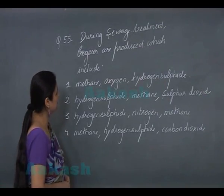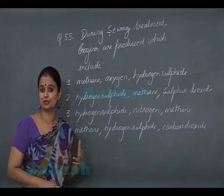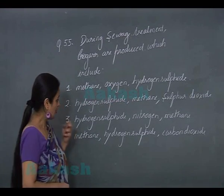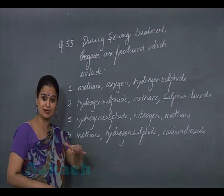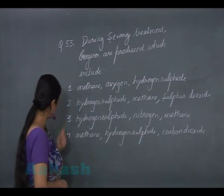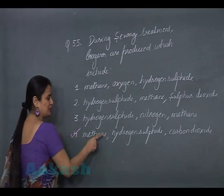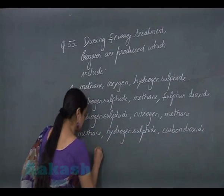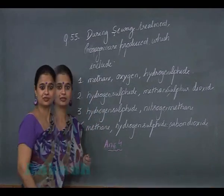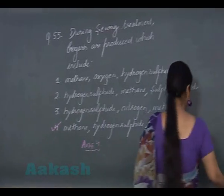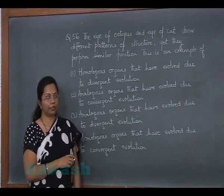Question 55: during sewage treatment, biogas is produced in anaerobic digestion. Biogas is a methane-rich fuel; along with methane it also contains carbon dioxide and H2S. Looking at the four options, option 4 includes methane, hydrogen sulfide, and carbon dioxide. So the answer for question 55 is option 4.